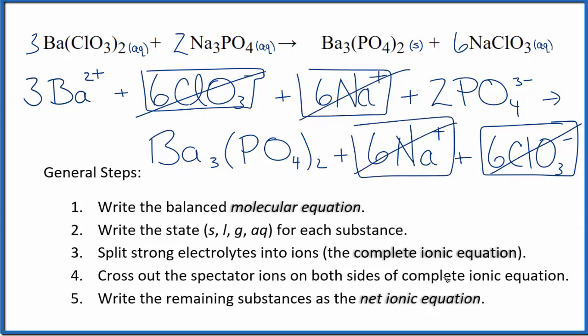What's left, that's the net ionic equation for barium chlorate and sodium phosphate. I'll clean it up and write the states. We'll have our net ionic equation.